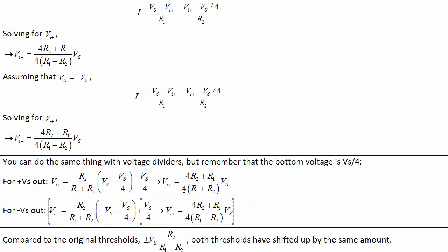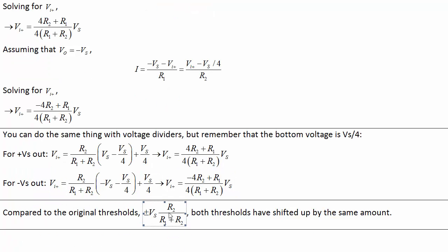You find out that the voltages for positive Vs out and negative Vs out respectively are as follows, which are almost the same as the previous one, except that we've got them both shifted up by R1 over 4 R1 plus R2 times Vs. We'll see you next time.